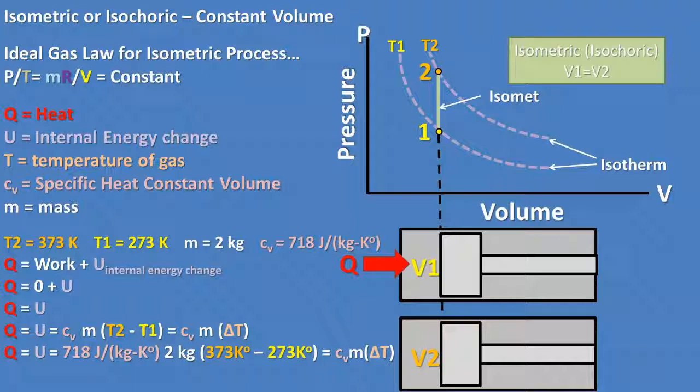The constant volume specific heat of air in this case is 718 joules per kilogram degree Kelvin. This means that for every kilogram of air you raise 1 degree Kelvin, it requires 718 joules of energy.